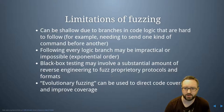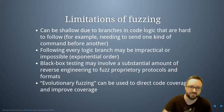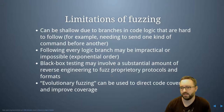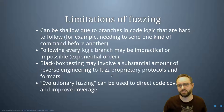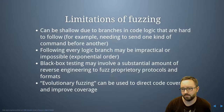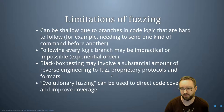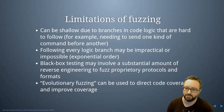Following every branch in logic may be impractical or impossible, and there's an exponential problem where the deeper you go, the more branches there are to follow. Black-box testing can involve substantial reverse engineering to fuzz proprietary protocols and formats. Evolutionary fuzzing is a more advanced approach — not what Spike does — where you direct code coverage and improve it by measuring the coverage achieved.